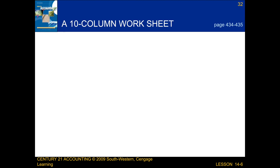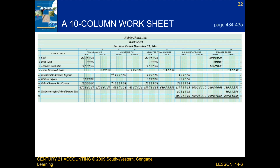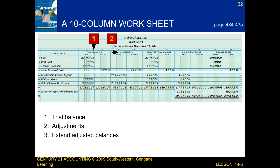The last thing we're going to be talking about in this lesson is a ten-column worksheet for a merchandising business. The different numbers are showing us the different parts to this ten-column worksheet. Number one is showing us the trial balance columns. Number two is showing us the adjustments columns. Number three is showing us that we extend the adjusted balances to the adjusted trial balance columns. Number four is showing us that we total, rule, prove, and rule the trial balance columns, the adjustments columns, and the adjusted trial balance columns.